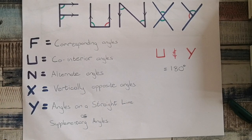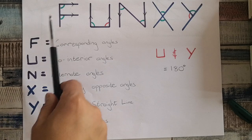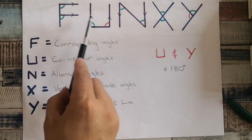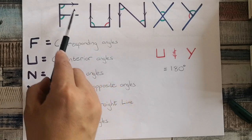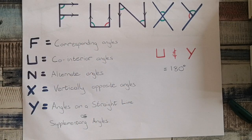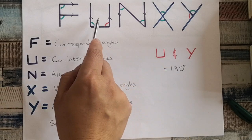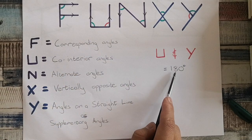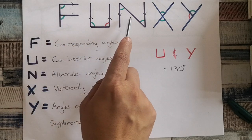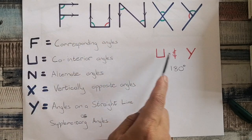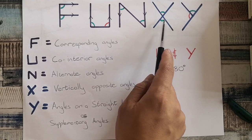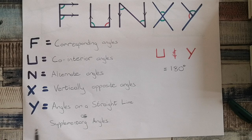Today we're going to be dealing with FUNCSI, or geometry of straight lines. You can see all of these over here — I have straight lines. The important thing to note is that with F, U, and N — with FUN — I have parallel lines. FUN cannot work if I do not have parallel lines. My U and Y are the only ones that equal 180, so these two together must add up to 180. FUN can only work with parallel lines, while X and Y only need straight lines.